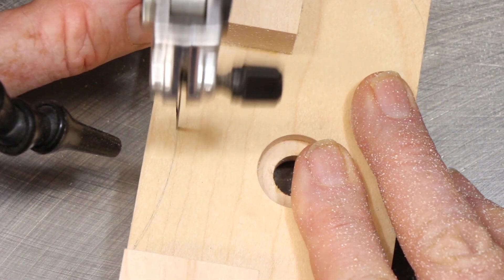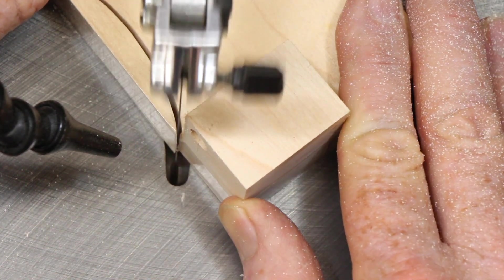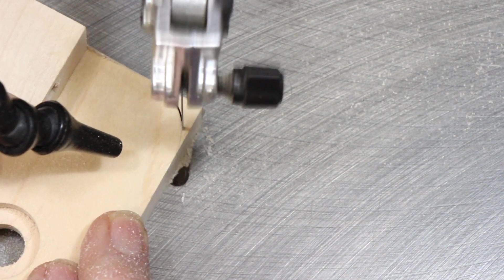I spent a few minutes shaping the body on my scroll saw. This is entirely cosmetic and optional. Removing the concave arc on the front side allows the jig to get closer to the router base for turning small circles.